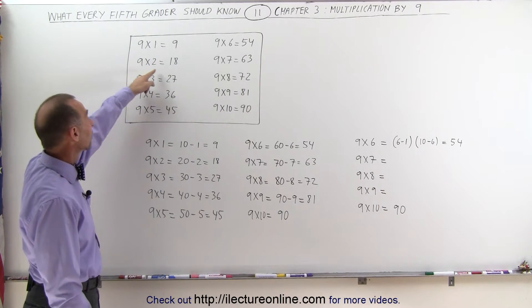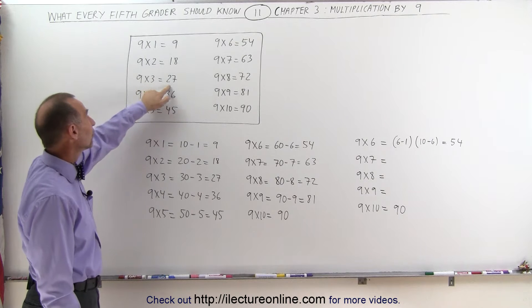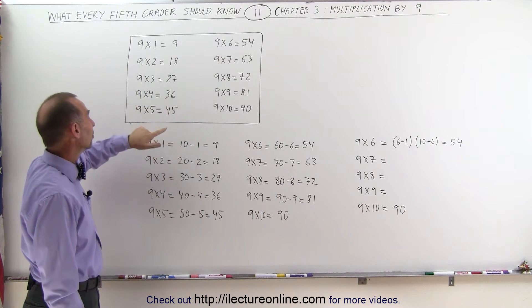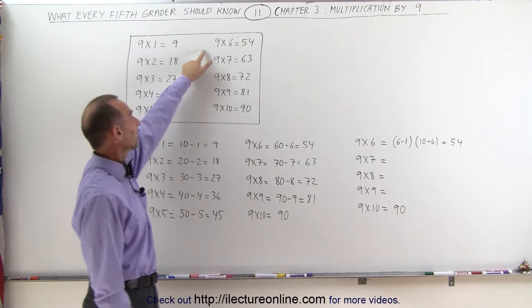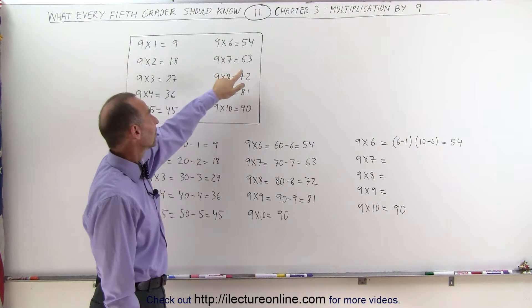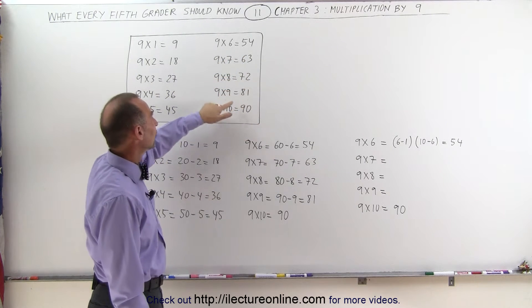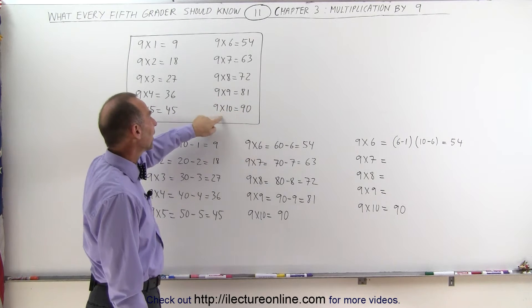9 times 1 is 9, 9 times 2 is 18, 9 times 3 is 27, 9 times 4 is 36, 9 times 5 is 45, 9 times 6 is 54, 9 times 7 is 63, 9 times 8 is 72, 9 times 9 is 81, and 9 times 10 is 90.